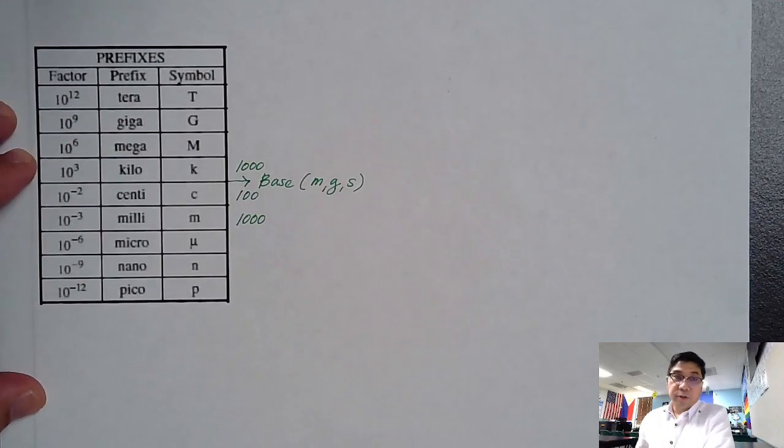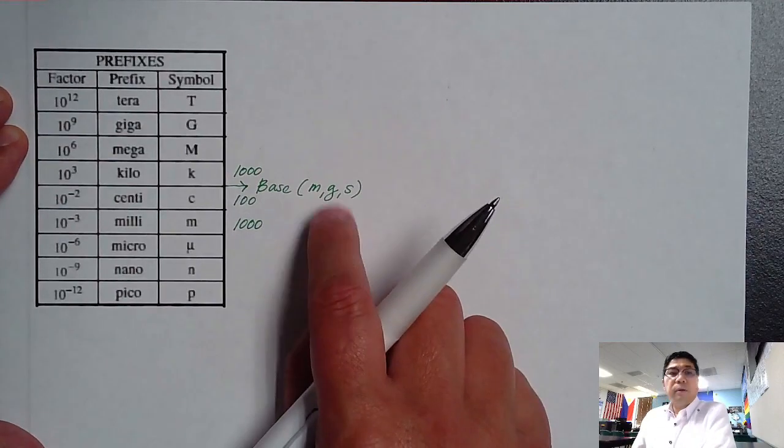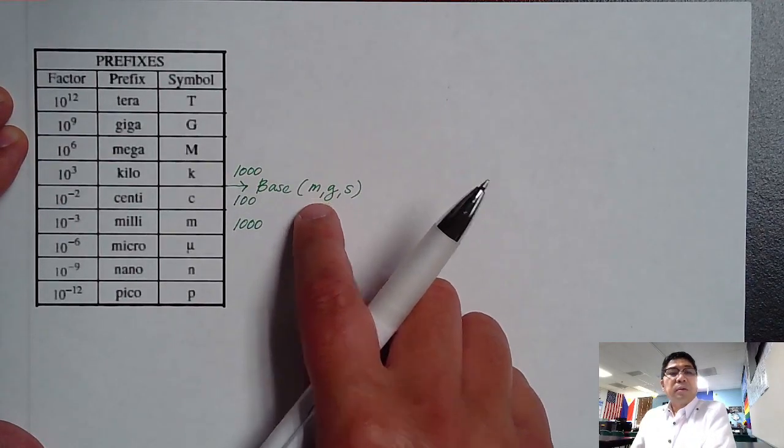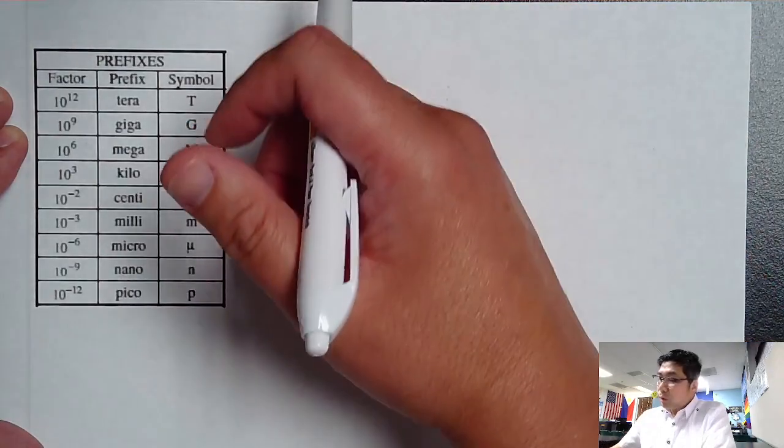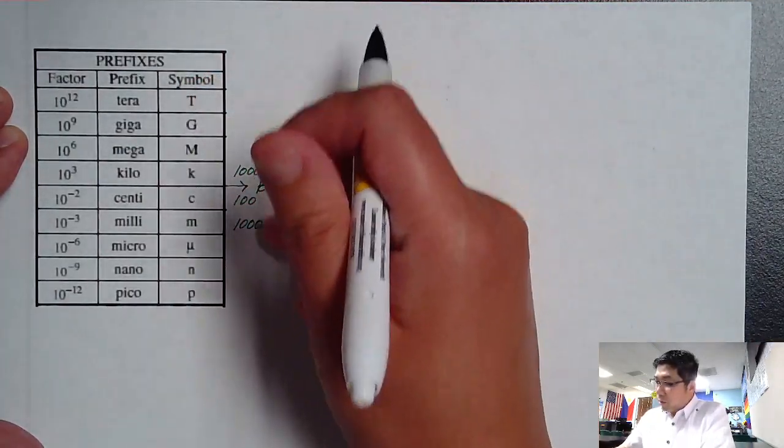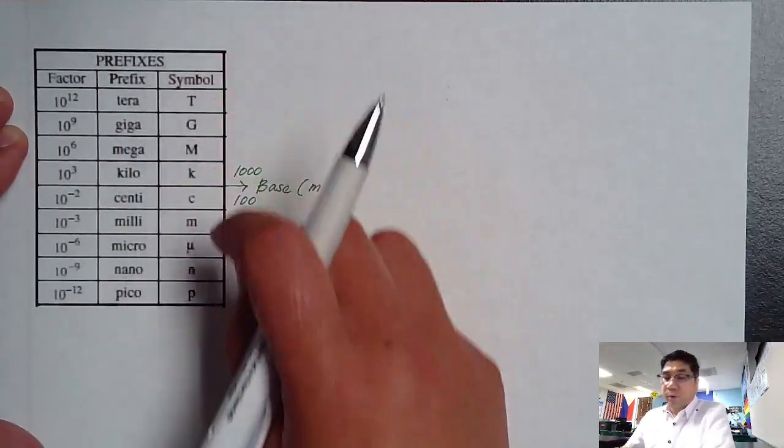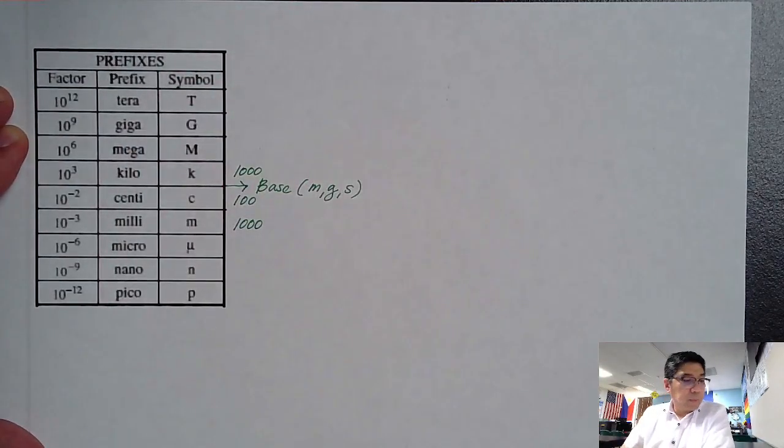So in this next video, let's continue converting units from base to a prefix unit, or maybe from base going down, or from down going to base, or from top going to base. Just one step at a time.